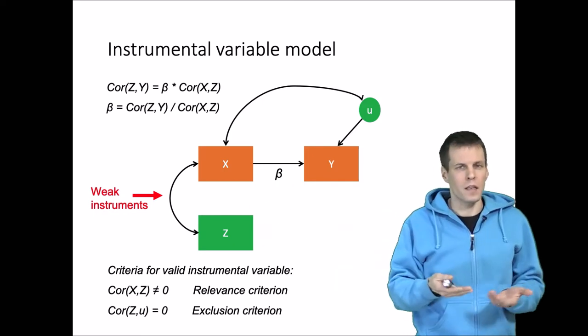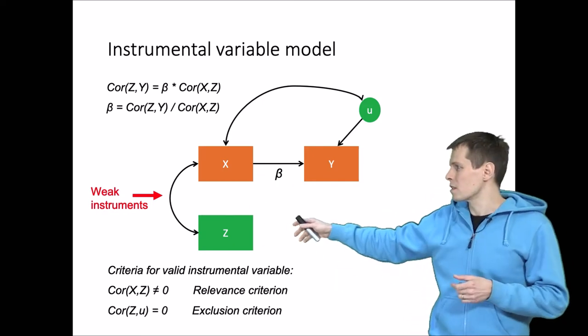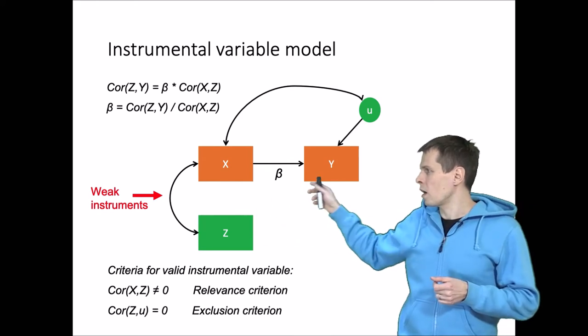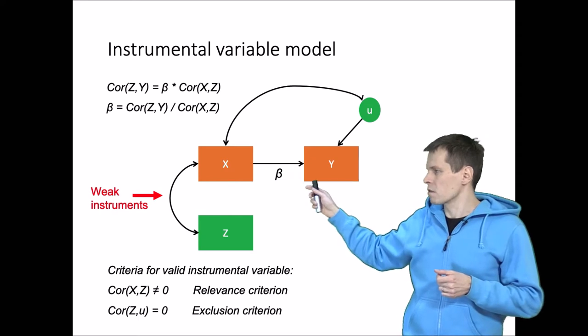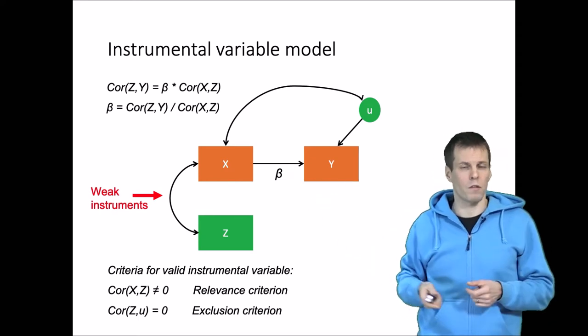And why that's the case? Well if you consider what is the model implied correlation between z and y, it is the z-x correlation times this beta regression coefficient here, and from there you can solve the beta.